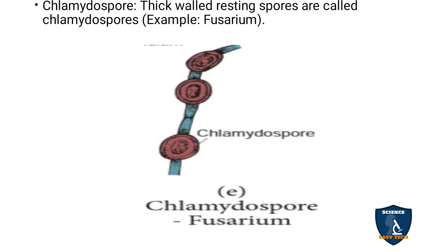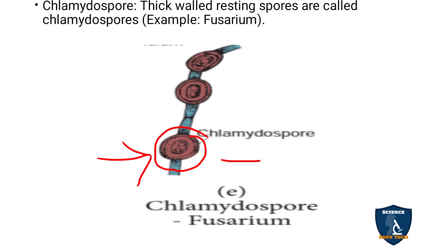Chlamydospores are thick-walled resting spores. They cannot move and produce a thick wall around them. These thick-walled spores are called chlamydospores. Example: Fusarium.